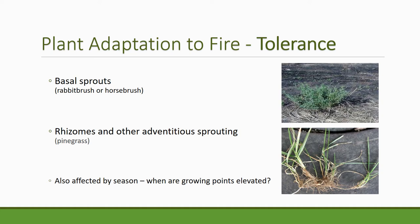Rhizomes are a great example of fire tolerance — they have adventitious roots and axillary buds right under the surface, so after a fire those buds are ready to start a new plant. Pine grass is a good example: it may not be visible at all until a fire, and then there will be a flush of growth from those underlying rhizomes. The ability to tolerate or recover after fire is also affected by season. If growing points are elevated, it's harder on the plant to lose that meristematic tissue, but if resources are available when the fire goes through, the plant can recover and start photosynthesizing again.